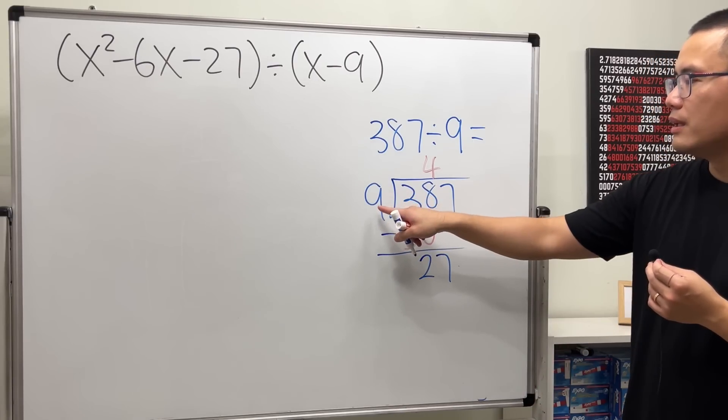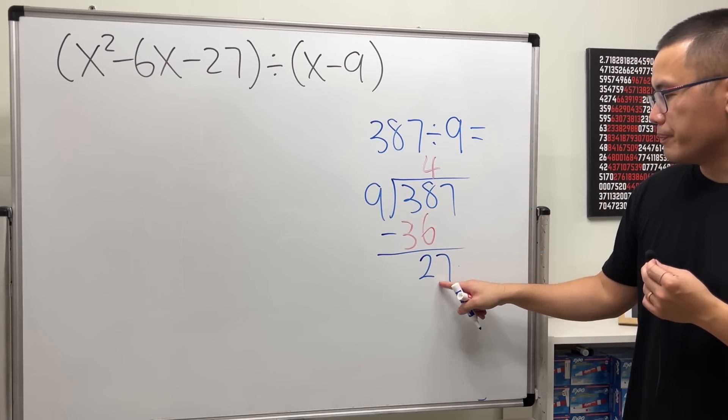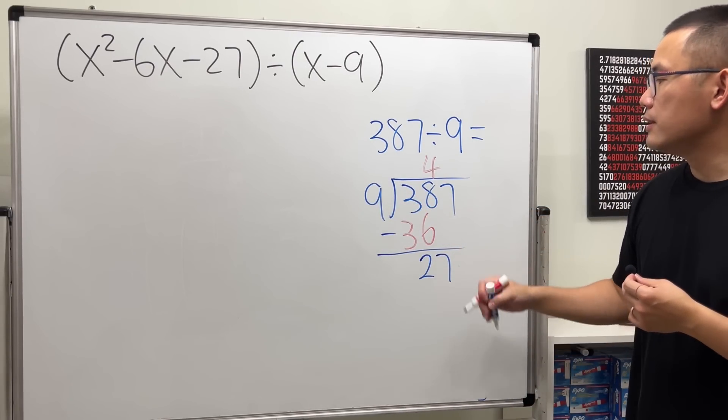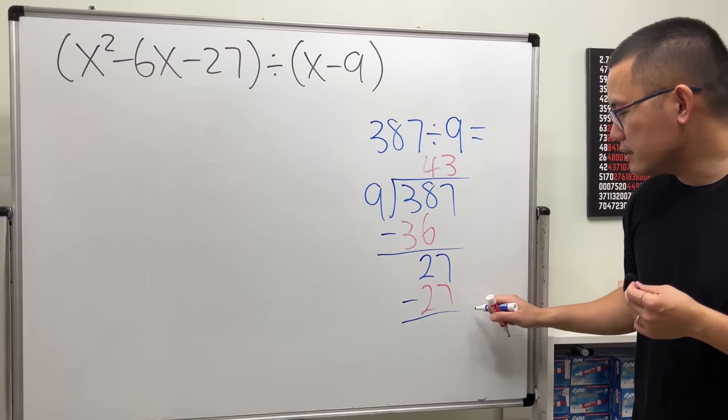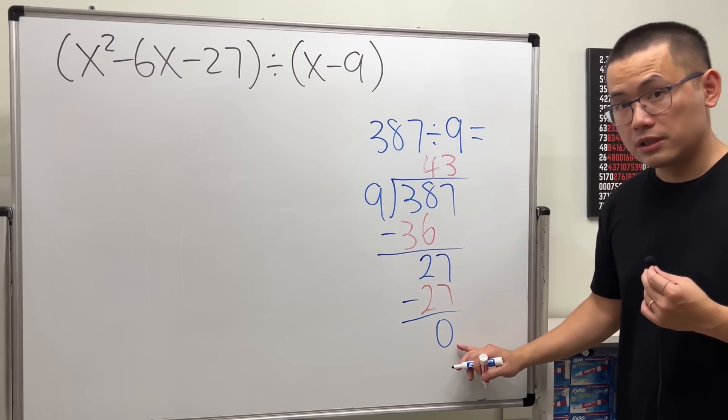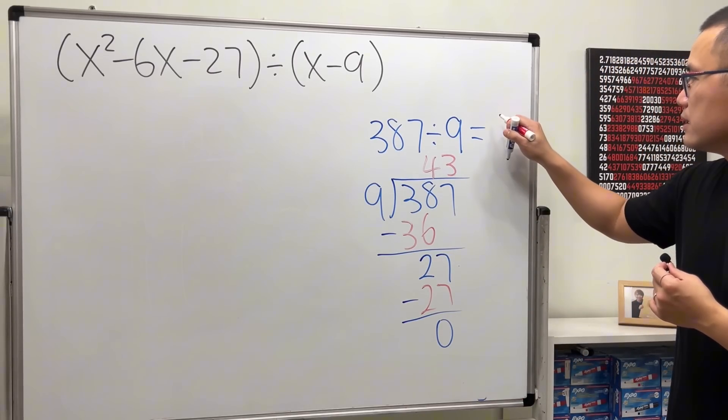And then we ask ourselves, how many times does 9 go into 27? The answer is 3. 3 times 9 is 27. And subtract. And we end up with remainder 0. So the answer for this is 43.